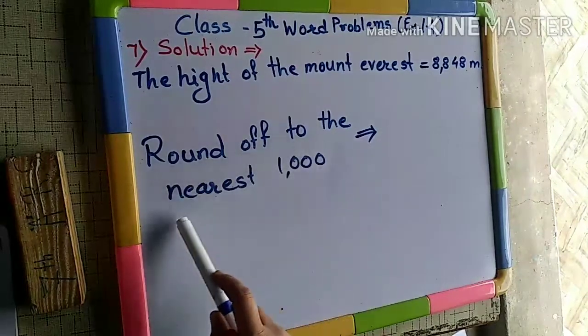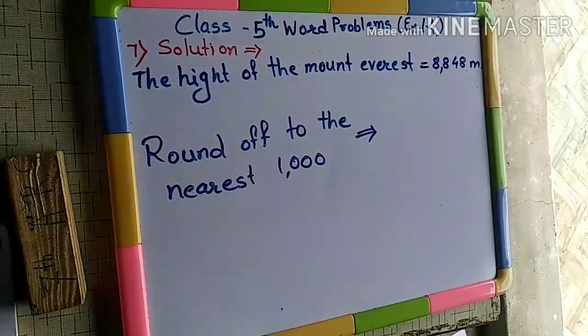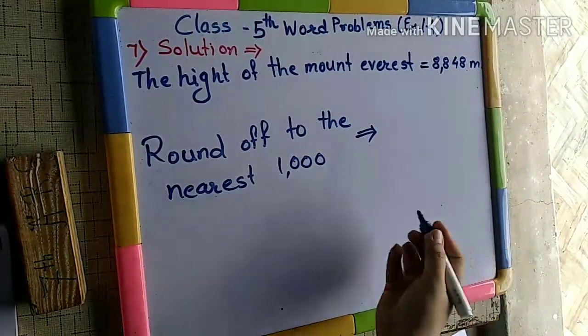When we round off a number to the nearest thousand, we look at the hundreds digit to decide whether to round up or down.